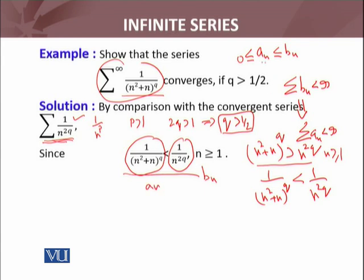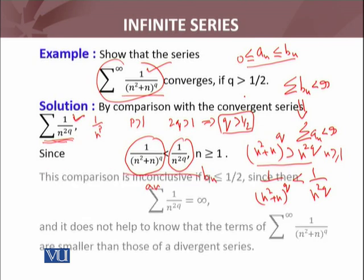Now a_n and b_n satisfy the required conditions. Furthermore, we know that summation b_n is convergent whenever q is greater than 1/2. So by the comparison test, summation a_n — this series — will also converge whenever q is greater than 1/2.